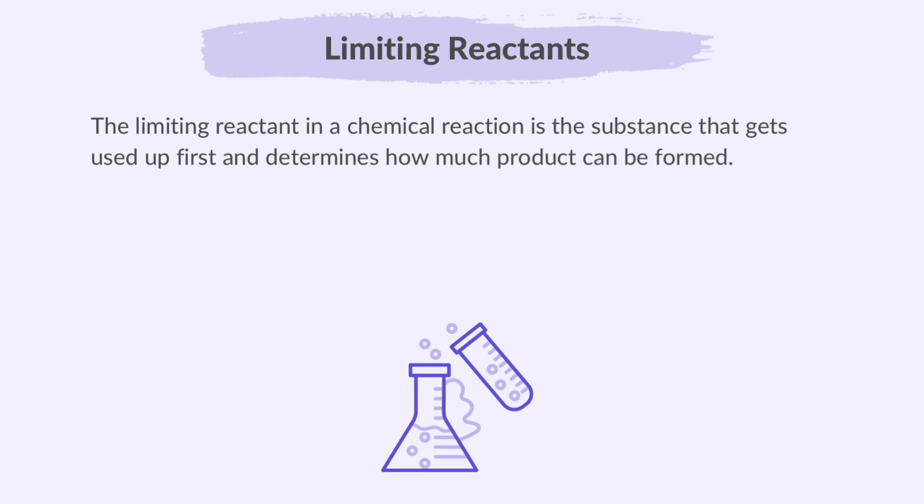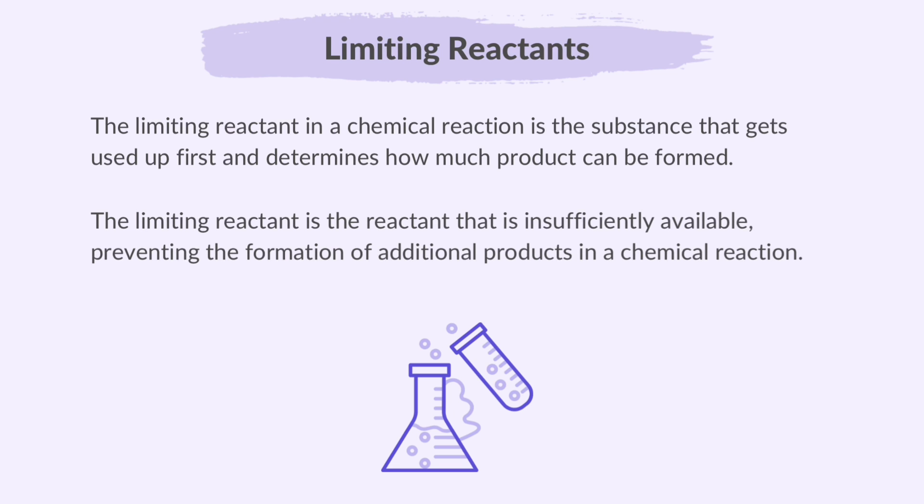What are limiting reactants? The limiting reactant in a chemical reaction is the substance that gets used up first and determines how much product can be formed. It's like having ingredients for a recipe and the one you run out of first limits how much you can cook. The limiting reactant is the reactant that is insufficiently available, preventing the formation of additional products in a chemical reaction. The other reactants are left over if there's more of them than needed, but the limiting reactant is what matters for calculating the amount of product.